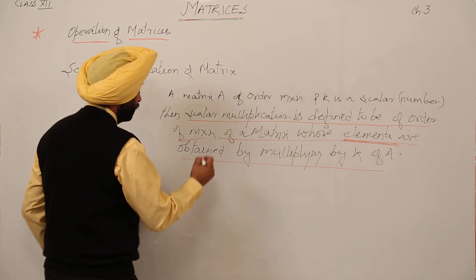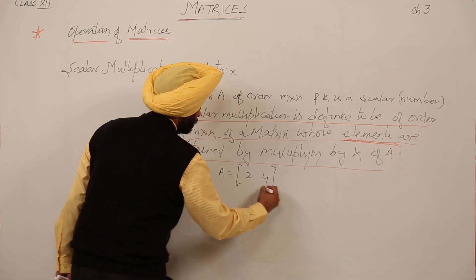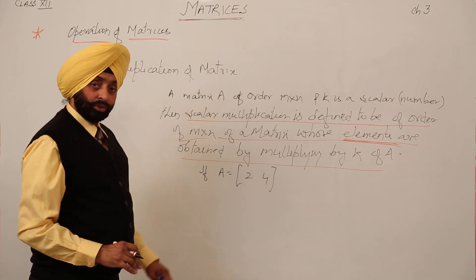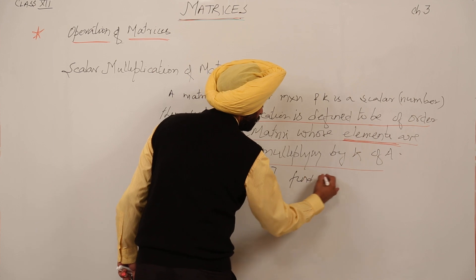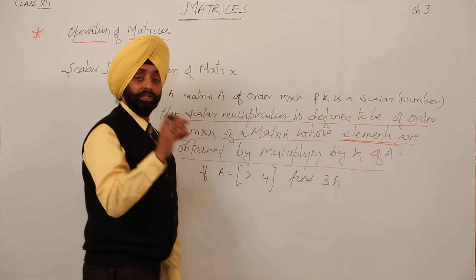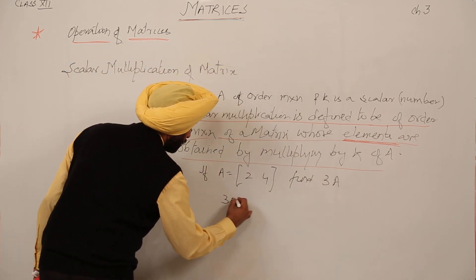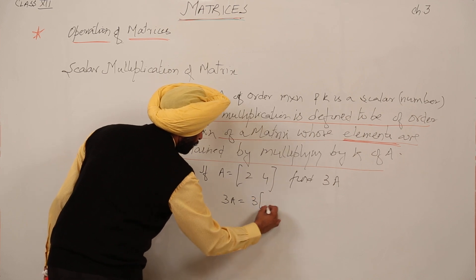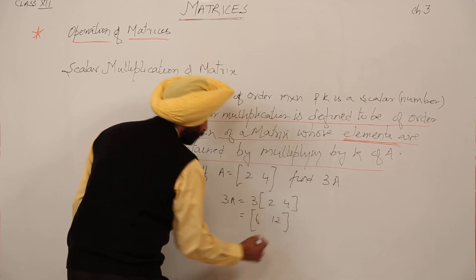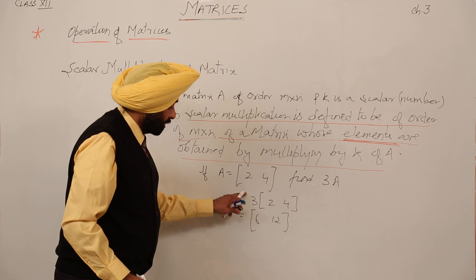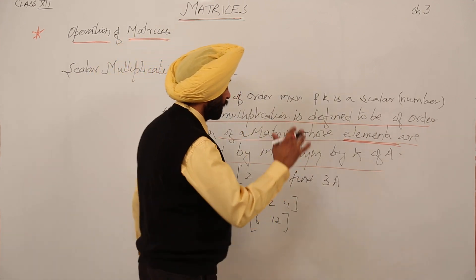Let's take an example. If A = [2, 4] — a row matrix — and we have to find 3A, then 3 is the scalar k. So 3A = 3 × [2, 4] = [6, 12]. That is, 3 multiplied by 2 gives 6, and 3 multiplied by 4 gives 12. The scalar 3 is multiplied by every element.